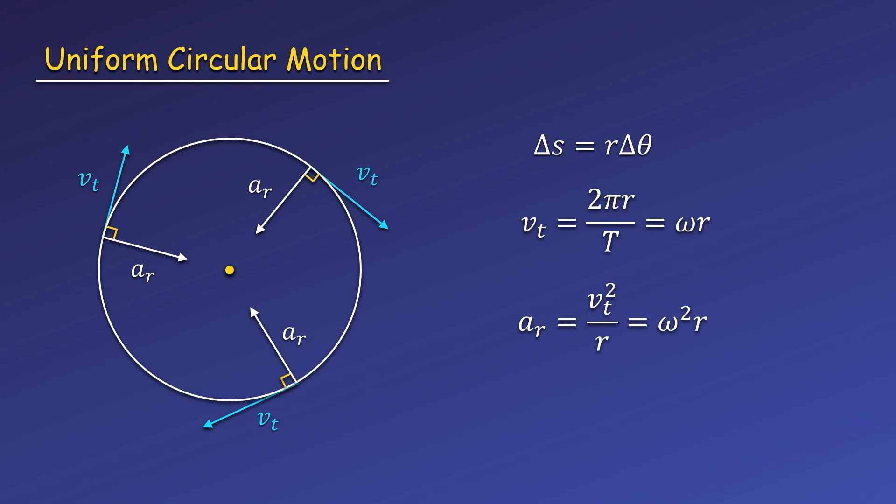You may hear me use the word speed and velocity interchangeably here, and I really mean the magnitude of velocity. Though the direction of velocity is always changing, it is always tangent to the circle, and the acceleration is always perpendicular. So the relative directions remain the same.